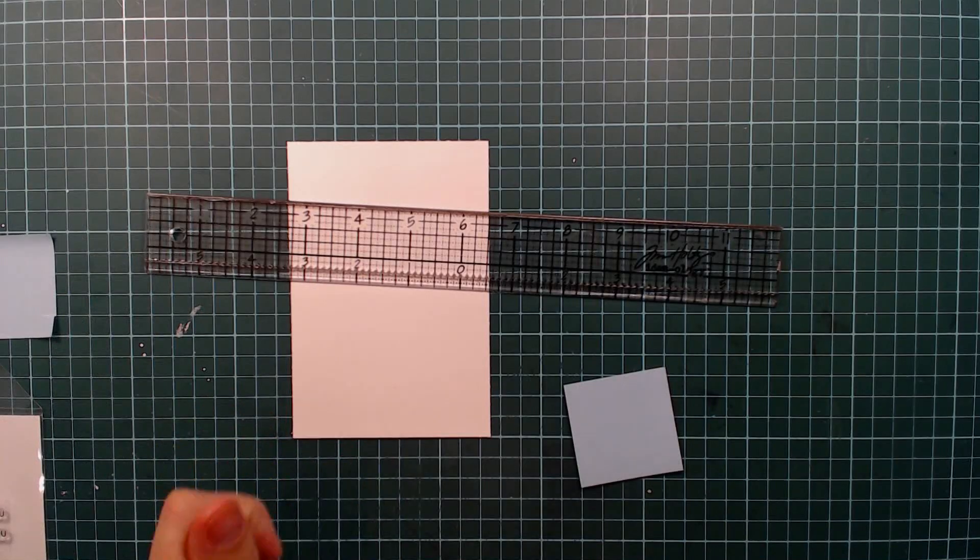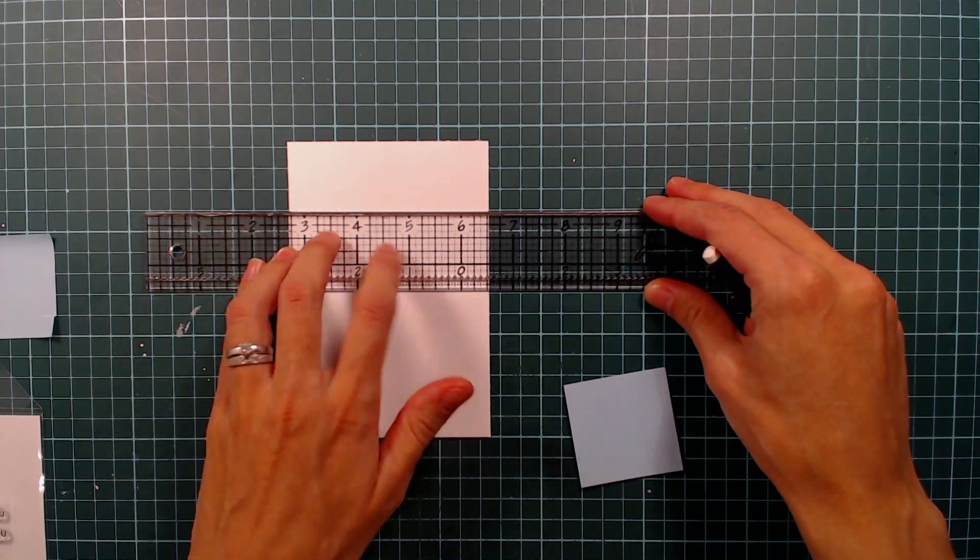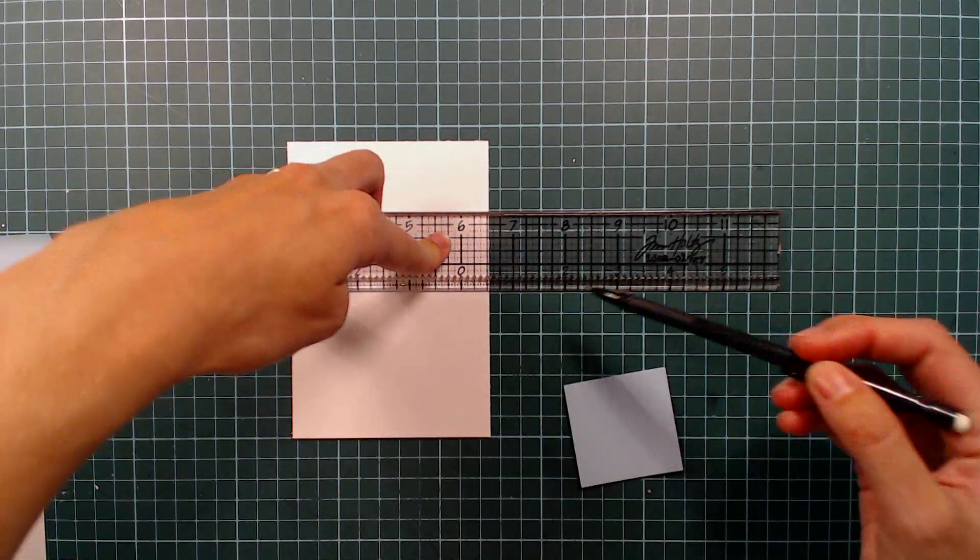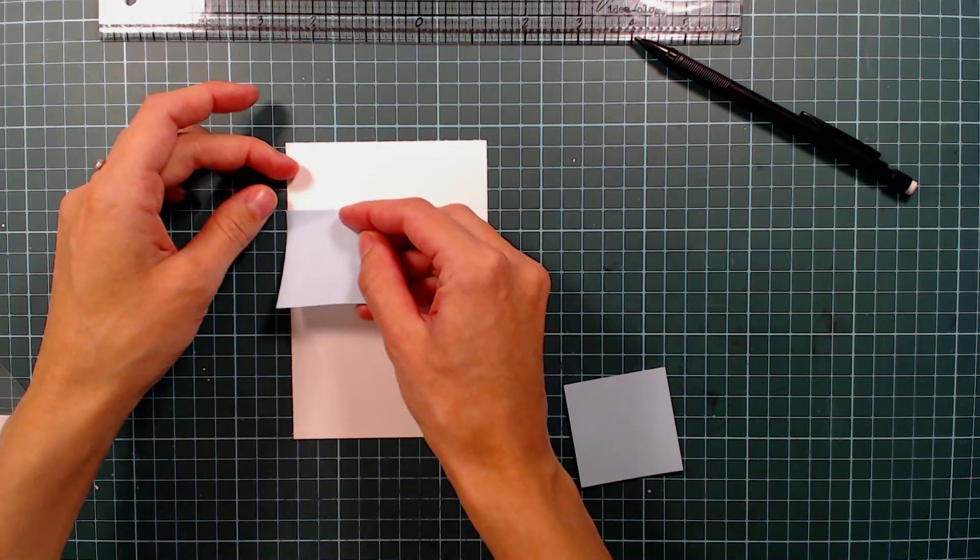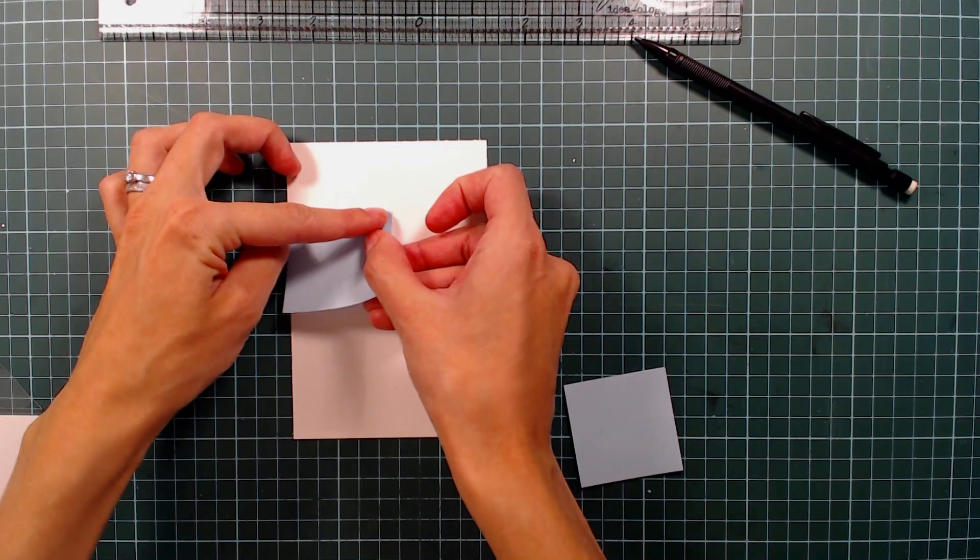I'm using the sentiment stamp to determine how much white space I need to mask off and then I will use my Tim Holtz ruler to make sure that I have straight lines. I'm just using some small post-it notes to do my masking here.